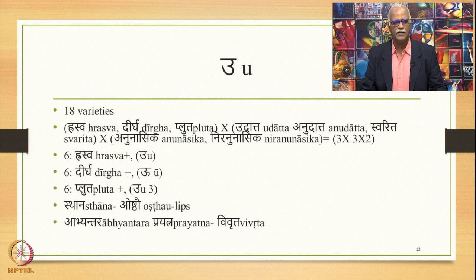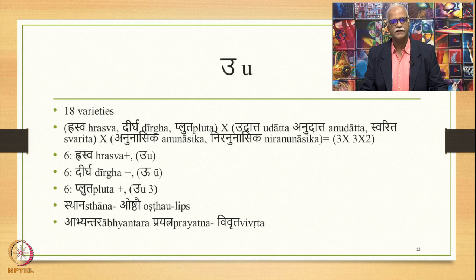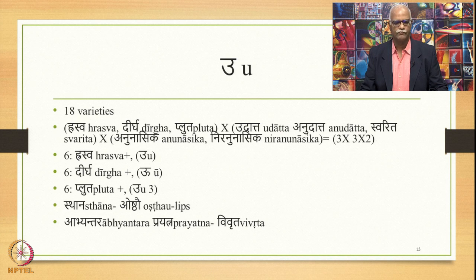Let us go to vowel U. Similarly, U also has 18 varieties — 3 related to length (raswa, dirgha, pluta), multiplied by 3 accents (udatta, anudatta, swarita), multiplied by anunasika and niranunasika. So 3 multiplied by 3 multiplied by 2 gives 18. There are 6 varieties of raswa U, 6 varieties of dirgha U, and 6 varieties of pluta U. The place of articulation for this sound is lips — oshthau. The abhyantara prayatna for U is vivruta.